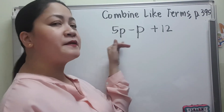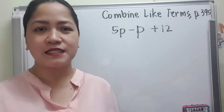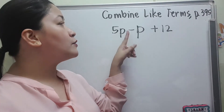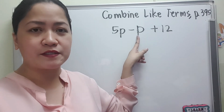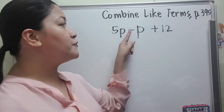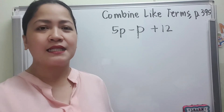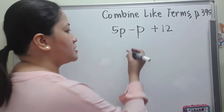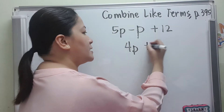Another example is 5p minus p plus 12. You are going to identify first the like terms. We have 5p and p and we are going to subtract. You might think what number is beside p. Just like the exponent explained earlier, if you don't see any number beside a variable, it means 1 — there is only 1p. So that will be 5p minus 1p, which is 4p, plus 12.